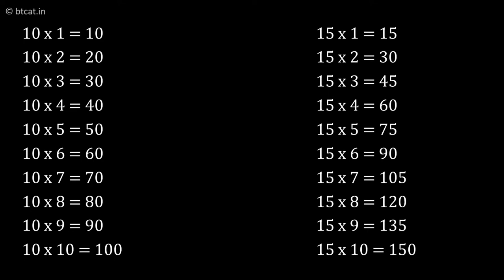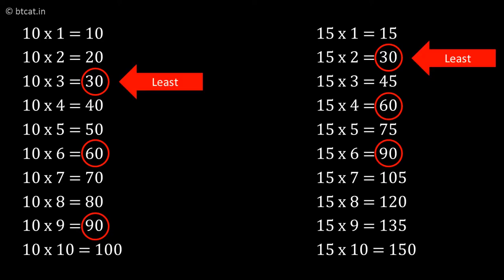So if you see 10 and 15, the common multiples of them are 30, 60, 90, 120, 150 and so on. Out of them, the least will be 30, which will become their LCM.